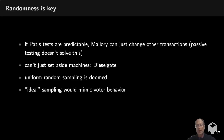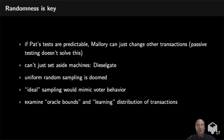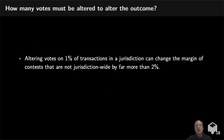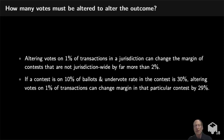Ideal sampling would mimic voter behavior - basically sample from what voters actually do. Suppose we could mimic voters perfectly: how many test transactions would we actually need to detect outcome-changing errors? In a jurisdiction-wide contest, changing votes on one percent of transactions can typically change the margin by two percent, or even more if there are undervotes. If the contest is only on a fraction of ballots, you need to change even fewer transactions to move the margin substantially. For instance, if one in ten voters is eligible for a contest and the undervote rate is 30%, changing one percent of transactions could change the margin in that contest by 29%. That's a lot of leverage.